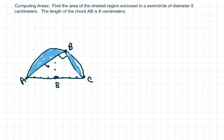Hey everyone, we're going to find the area of a shaded region enclosed in a semicircle with a diameter of 8 centimeters. The length of the chord AB, so that would be this part right here, is 6 centimeters. And they give you a hint that this is a right triangle. So I drew the semicircle the best I could.